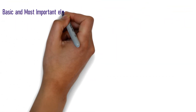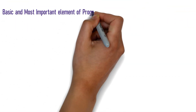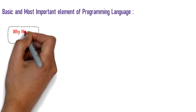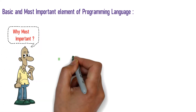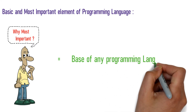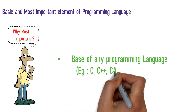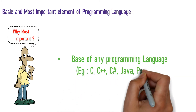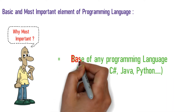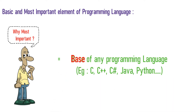Next are the basic and most important elements of a programming language. Whatever programming language you are learning — C Sharp, C++, Python, Java, or any other — this concept is the base. You can use it to learn any programming language.